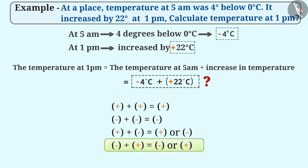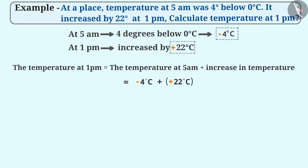You got it right. To add them, first we will ignore their signs. By doing so, we get their numerical values, that is, 4 and 22.